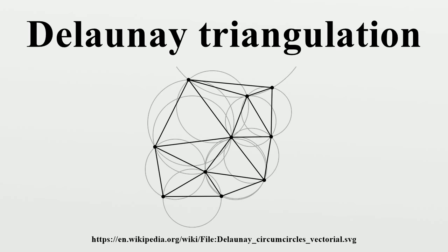A divide-and-conquer algorithm for triangulations in two dimensions is due to Lee and Schachter, which was improved by Guibas and Stolfi and later by Dwyer. In this algorithm, one recursively draws a line to split the vertices into two sets, computes the Delaunay triangulation for each set, and then merges the two sets along the splitting line. Using some clever tricks, the merge operation can be done in O(n) time, so the total running time is O(n log n). For certain types of point sets, such as a uniform random distribution, by intelligently picking the splitting lines the expected time can be reduced to O(n) while still maintaining worst-case performance.